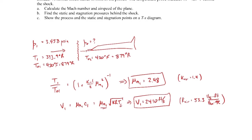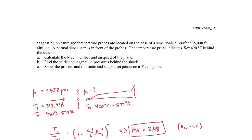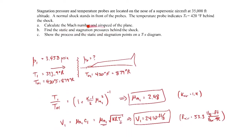So that's Part A — finding the Mach number and the airspeed of the plane. Now Part B is to find the static and stagnation pressures behind the shock. So we want to find P02 and P2. We're given P1. To find the static pressure across the shock, we can use the normal shock relations across the shock wave.